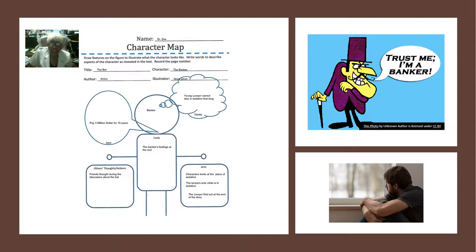And then there are other things that may be going on with your character — like what he or she might say, what they think, what they feel, and how they act. You may find some other things too. This is sort of like a graphic organizer with these areas for you to fill in as you read. We're dealing with two characters: one is a banker and one is a lawyer, and they are the characters in this story.